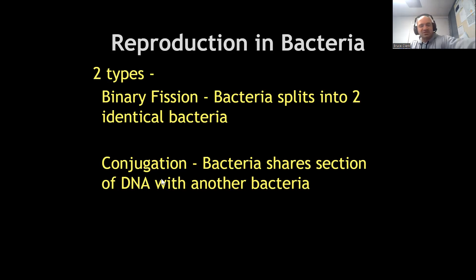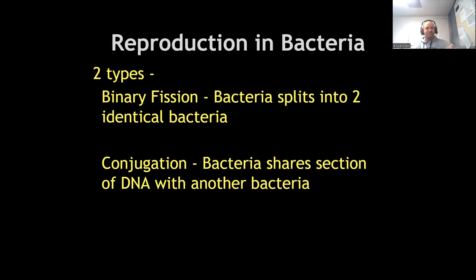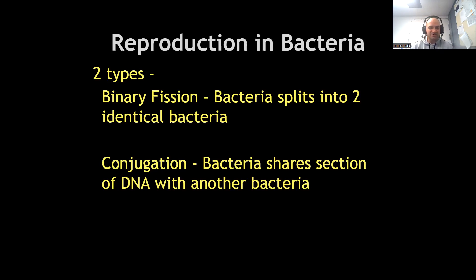The other method is far more interesting. During conjugation, bacteria can share DNA with other bacteria. This is something animals can't do — we can't go down the street and share a gene for eye color with our neighbor. Our only way to share genetic material is by reproducing. But bacteria can actually share chunks of DNA with each other and adopt new genes via conjugation.